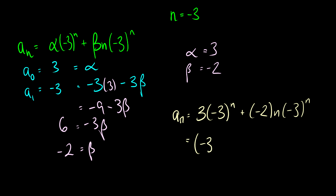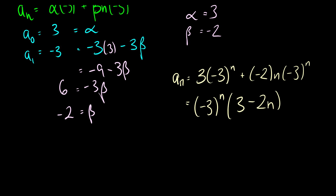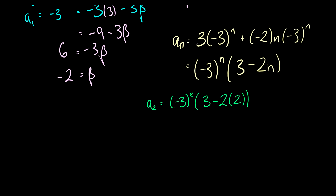We can factor out (−3)^n to simplify: a_n = (−3)^n·(3 − 2n). Let's verify with a_2: (−3)²·(3 − 2·2) = 9·(−1) = −9. That matches, so our formula is correct. That's the end of homogeneous recurrence relations. If you have any questions, leave them in the comments below.